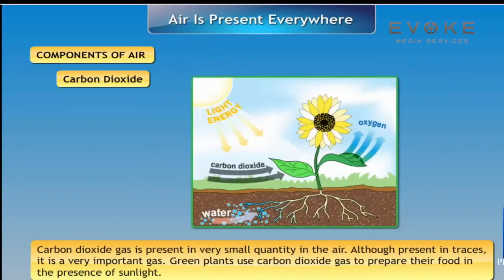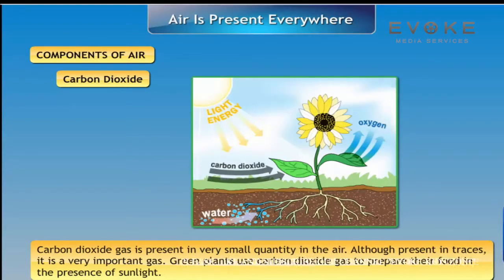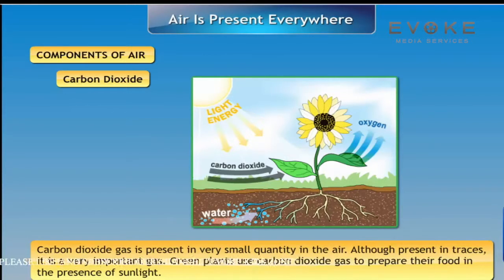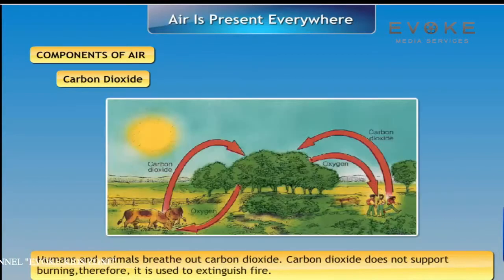Carbon dioxide: carbon dioxide gas is present in very small quantity in the air. Although present in traces, it is a very important gas. Green plants use carbon dioxide gas to prepare their food in the presence of sunlight. Humans and animals breathe out carbon dioxide.